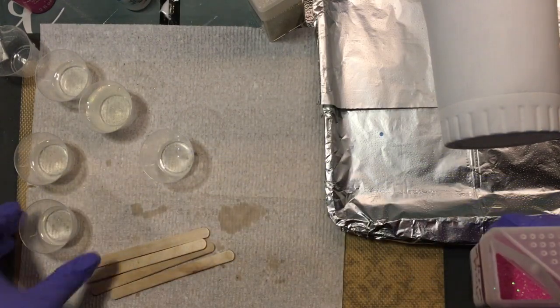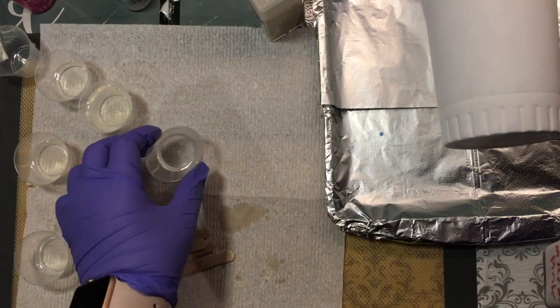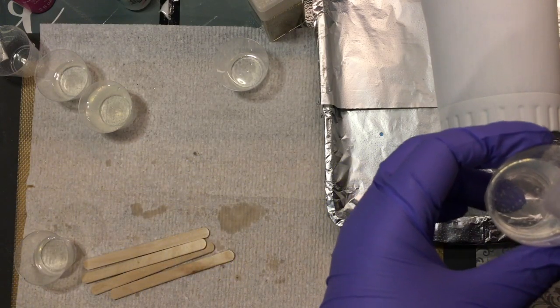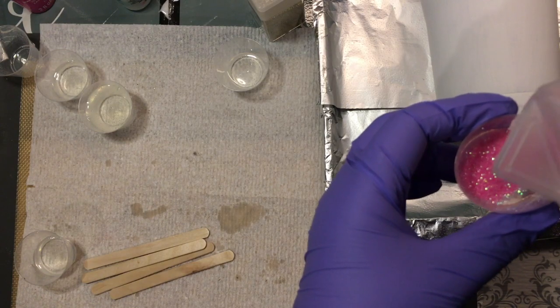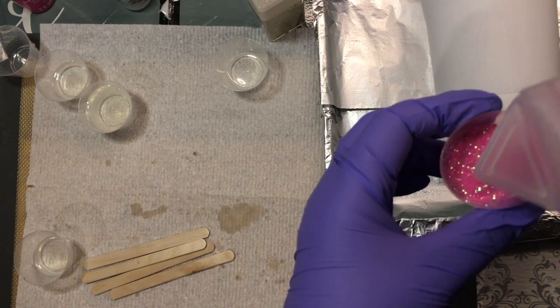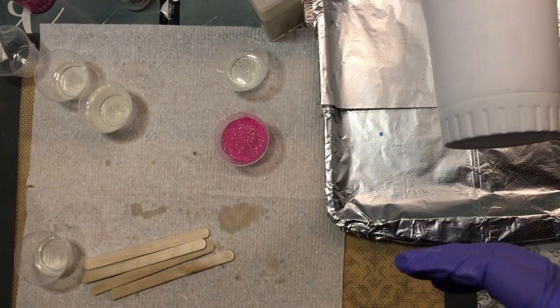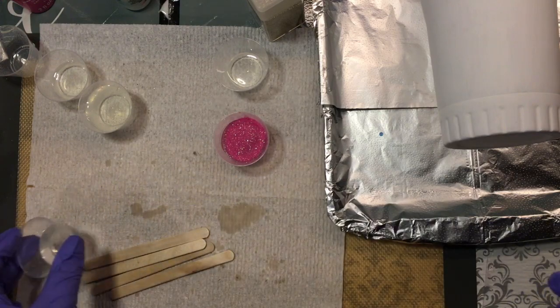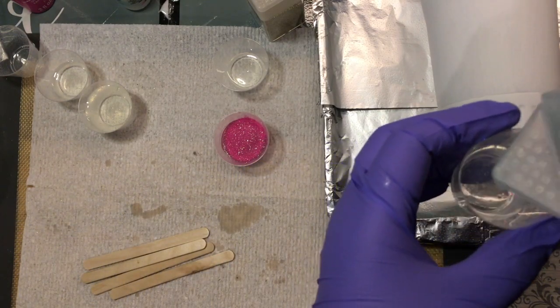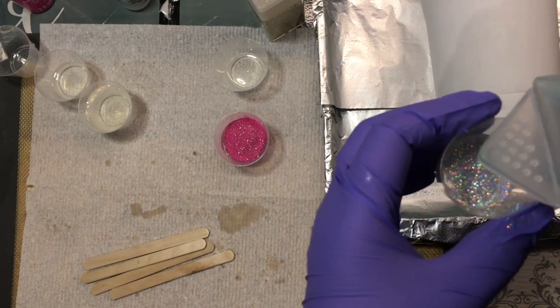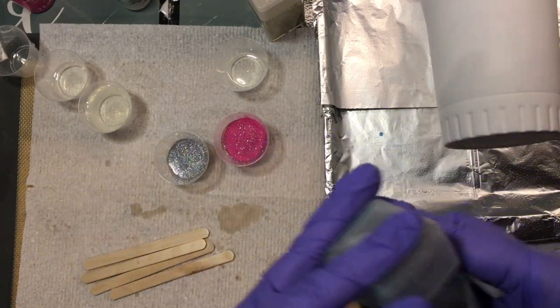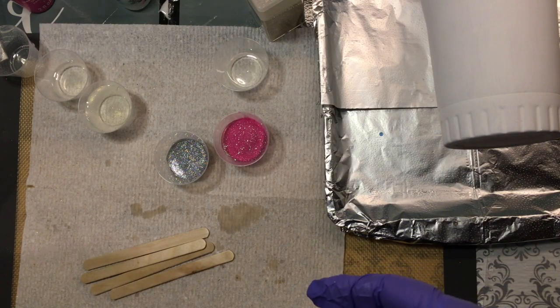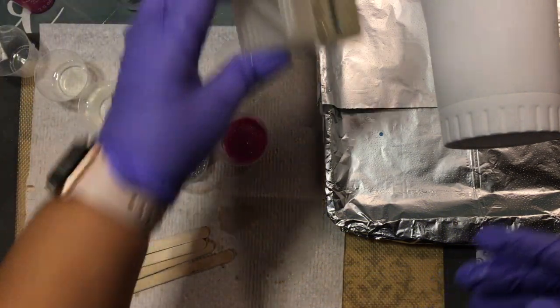Okay, so I already separated all my epoxy into little cups, and now I'm just going to add some glitter into each one. Pink, silver, and I'm going to use gold.